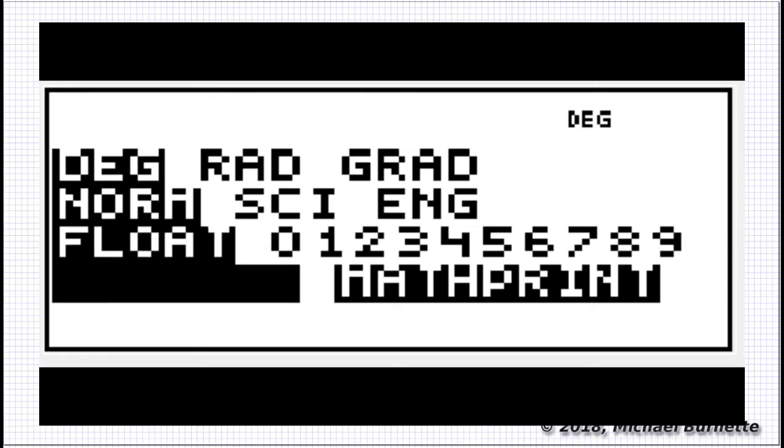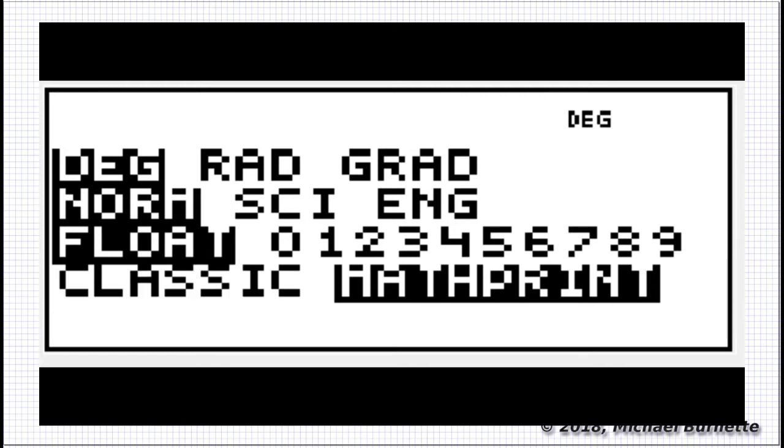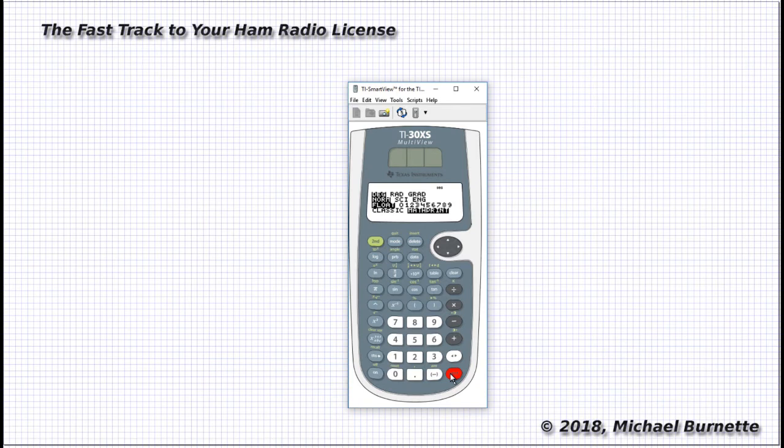Classic Math Print chooses mostly how your display shows fractions. We'll be using the Math Print setting. It's one of the main reasons you bought that particular calculator. Press ENTER to choose any item on that MODE menu, and CLEAR to exit out of it.